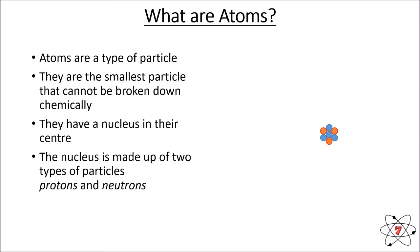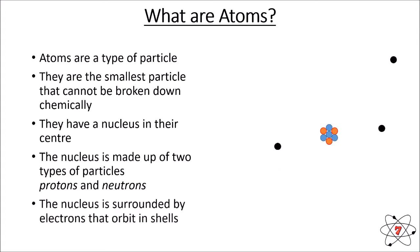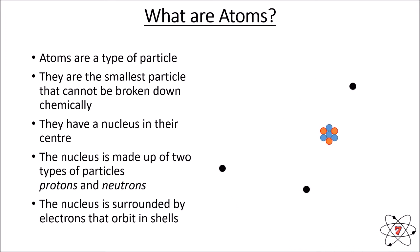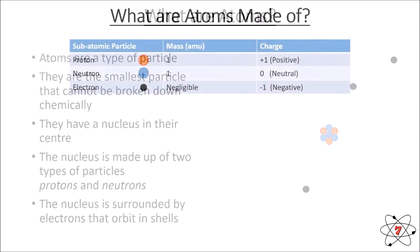Protons and neutrons are both subatomic. There's a third type of subatomic particle in an atom too, and these are called electrons. Electrons orbit the nucleus of the atom. The easiest way to think about this is that they're going around in circles, in the same way that a planet would orbit the sun.